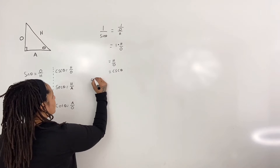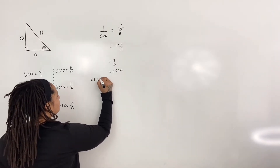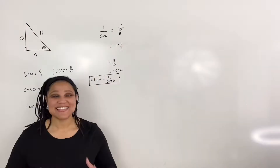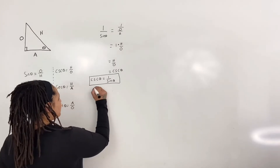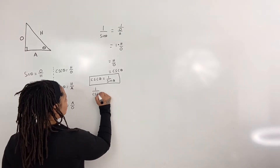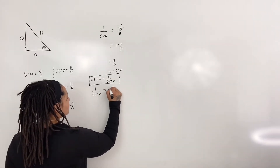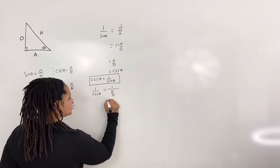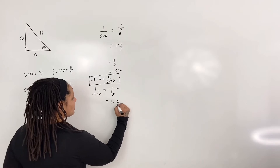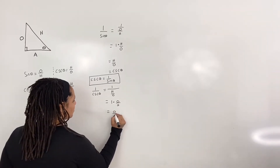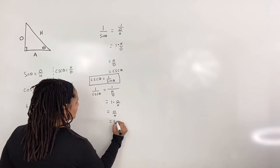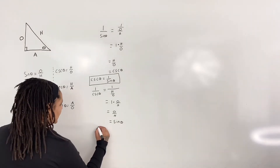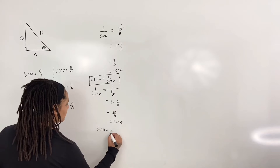Thus cosecant of theta is equal to 1 over sine of theta. Now let's prove it the other way. We begin with 1 over csc of theta, which is equal to 1 over hypotenuse over opposite, which is equal to 1 times opposite over hypotenuse, which is equal to opposite over hypotenuse, which is equal to sine of theta. So sine of theta is equal to 1 over cosecant of theta.